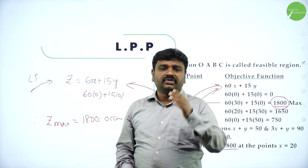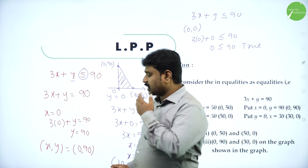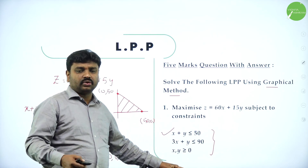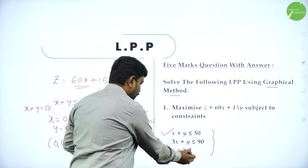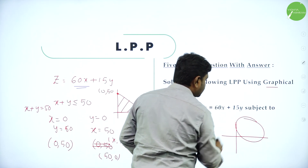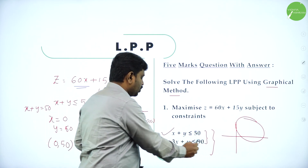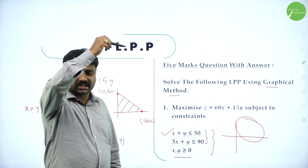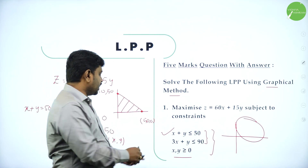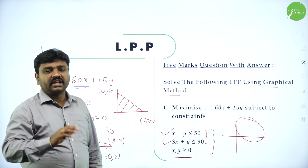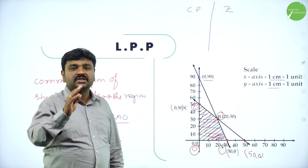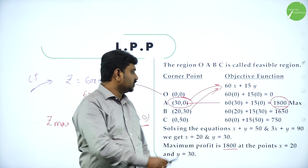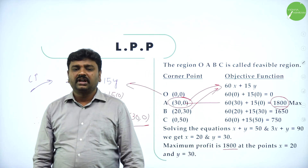Let me repeat the process: draw the constraints, shade them, find the common region (feasible region), identify corner points, then substitute corner points into the objective function Z to get its values. The highest value is maximum, the lowest is minimum. x, y ≥ 0 means we work only in the first quadrant — no need to draw that separately.